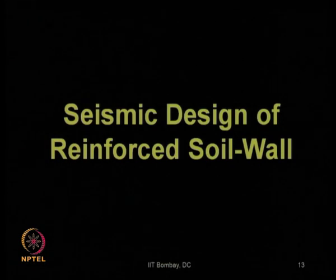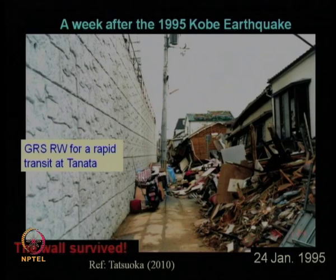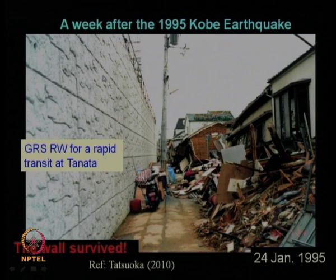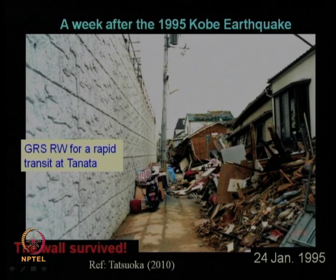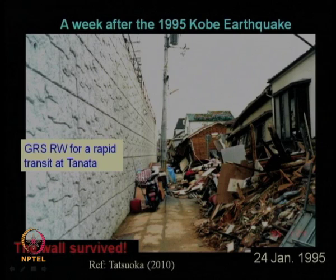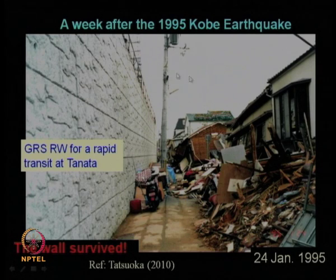We had also discussed the seismic design of reinforced soil walls. As given by Tatsuoka in 2010, during and after the 1994 Kobe earthquake in Japan, it was found that geosynthetic reinforced soil walls survived that big damaging earthquake of 1995 Kobe, whereas conventional structures and walls could not sustain that huge magnitude earthquake. This automatically shows the advantage of geosynthetic reinforced soil walls in withstanding greater earthquake loading compared to conventional retaining walls without reinforcement.